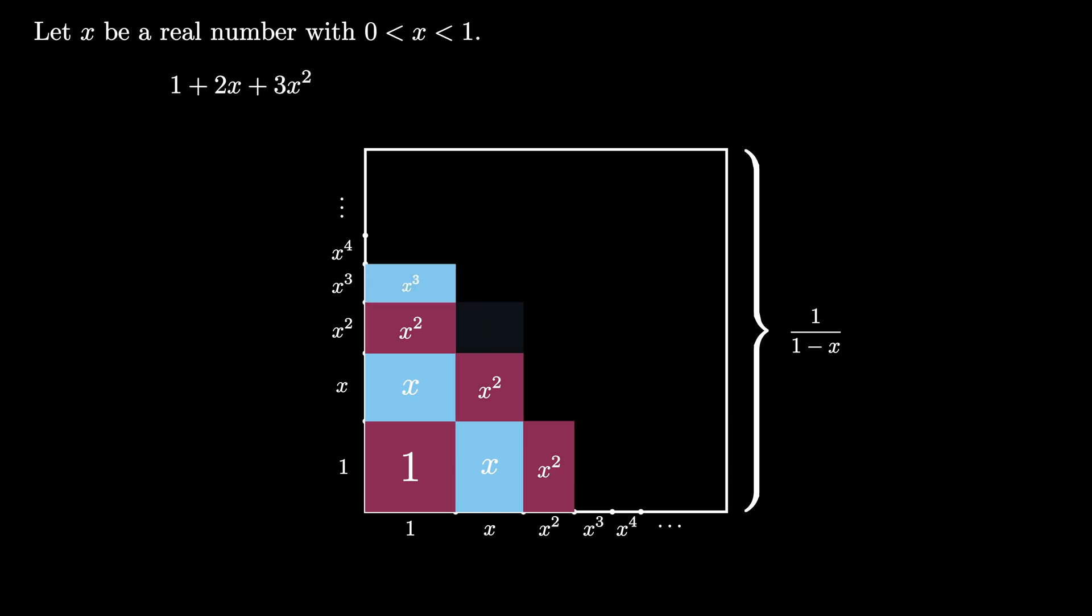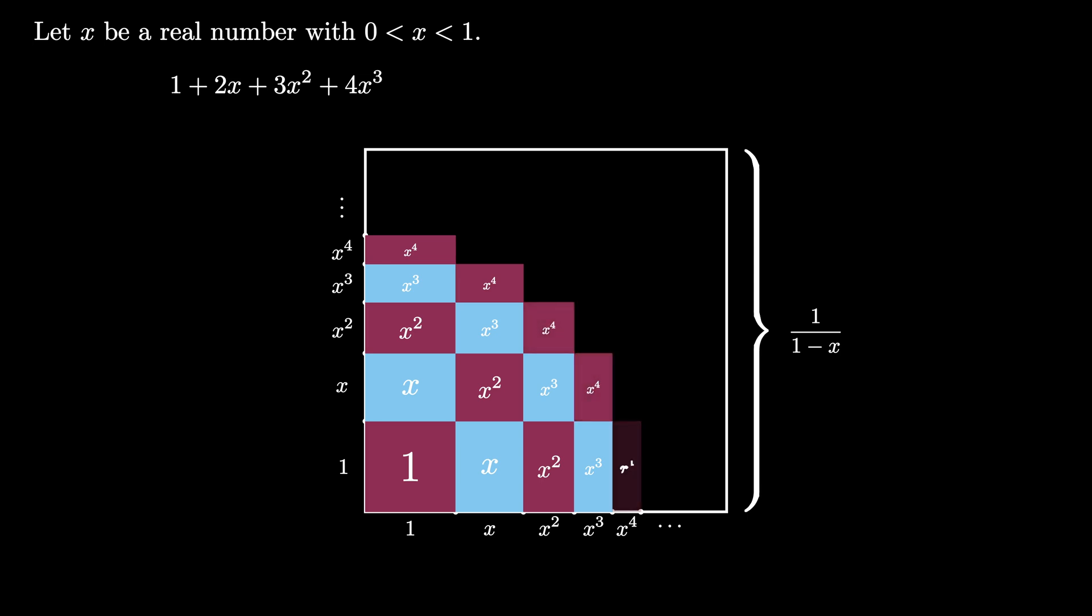On top of those rectangles, we can place 4 rectangles each with area x cubed enclosing an area of 4x cubed. On top of those rectangles, we have 5 rectangles each enclosing an area of x to the fourth for a total area of 5x to the fourth.